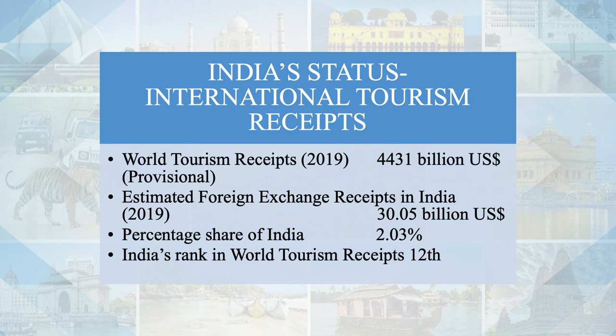In 2019, India welcomed 17.91 million international tourists, ranking as the eighth most visited country in Asia and the 23rd most visited destination in the world. This indicates that despite a lower share in arrivals, tourists spend more in India, and the average length of stay is about 16 days. This is an encouraging trend, as many of India's competitors like Singapore, Malaysia, and Thailand receive a much bigger share in arrivals but with a lesser length of stay compared to India.